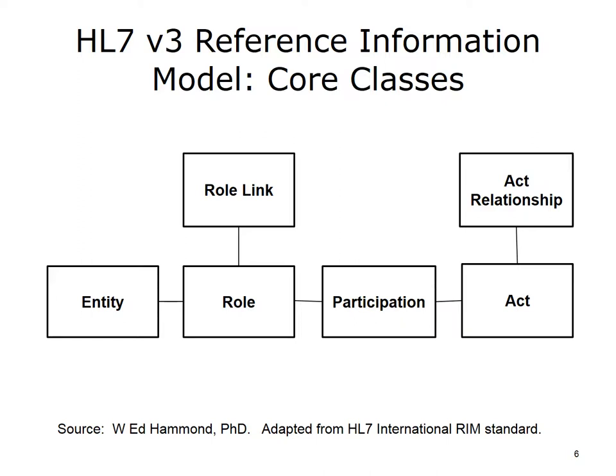Role-link is defined by a type code. Participation ties the entity in a specific role to the act. Examples of participation linkages include managed participation. ACT represents the verbs of the model. ACT includes a class code and a mood code, which identifies the status of the act, such as ordered, result, etc. Examples of the ACT class are document, context structure, working list, device task, control act, patient encounter, exposure, supplier, supply (which also includes diet), procedure (which also includes substance administration), account, observation (which also includes diagnostic image and public health case), invoice element, financial transaction, and financial contract.